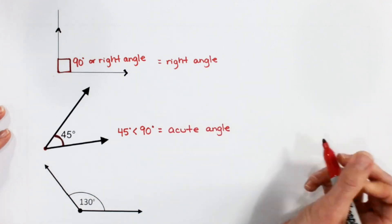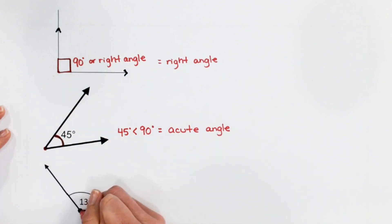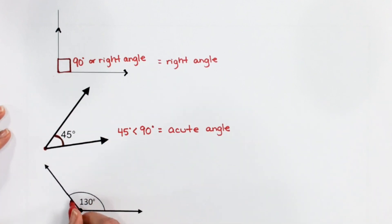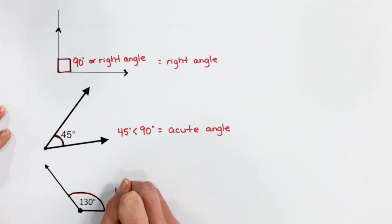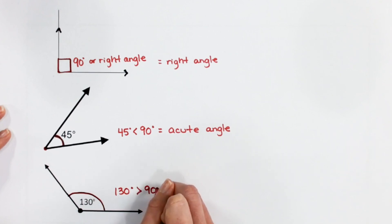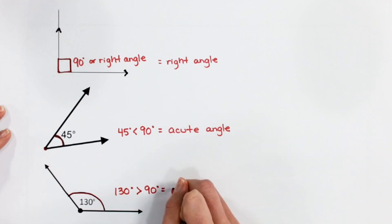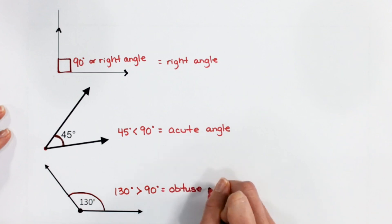And finally, we have a ray, another ray, that meet at an endpoint. And this angle, they tell us, is 130 degrees, which is greater than 90. So this is what we call an obtuse angle.